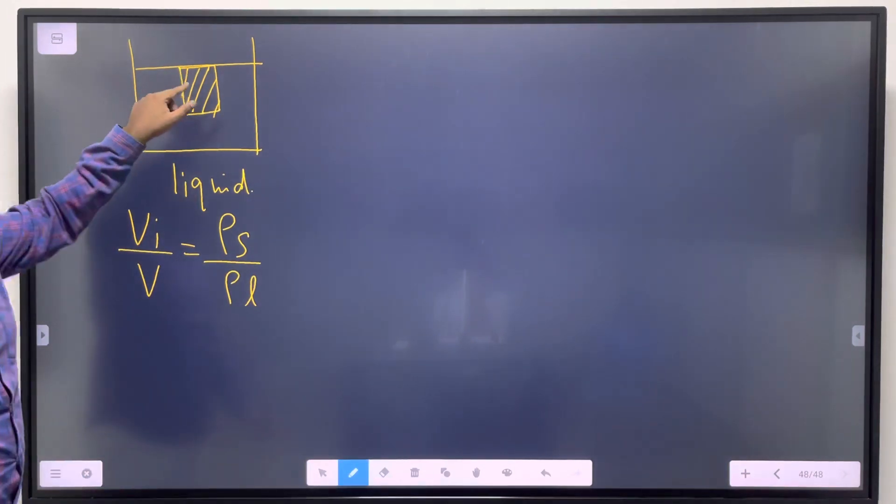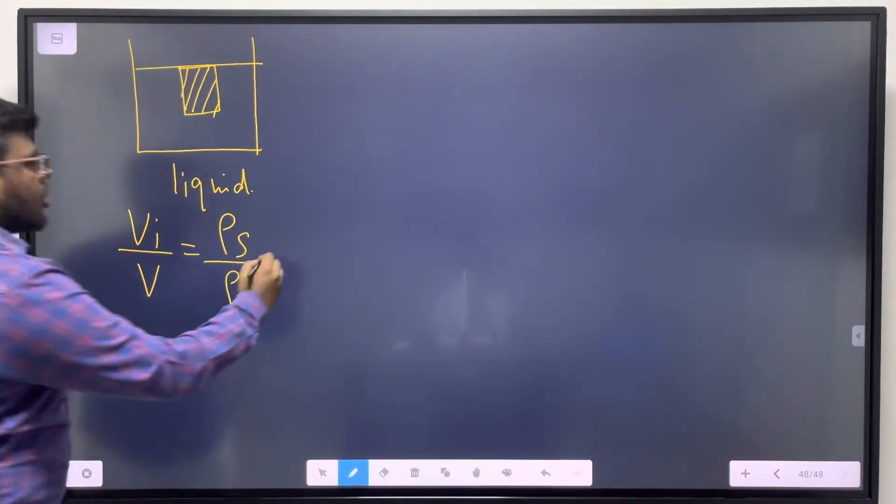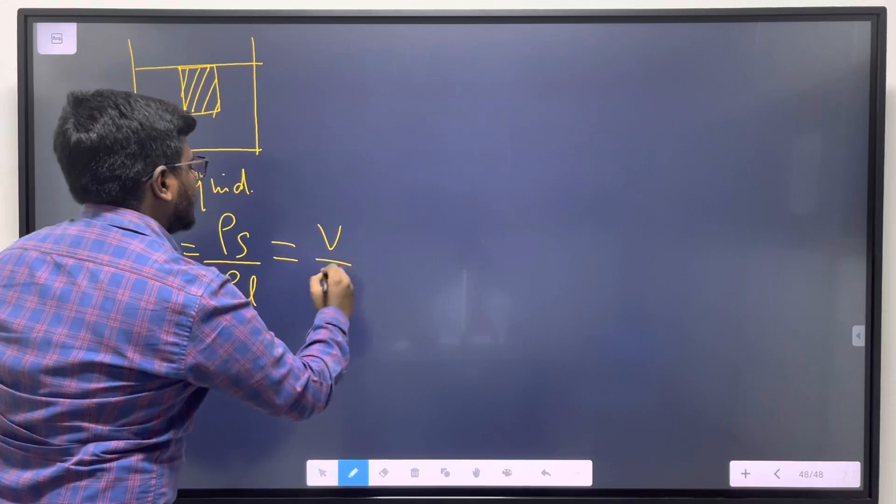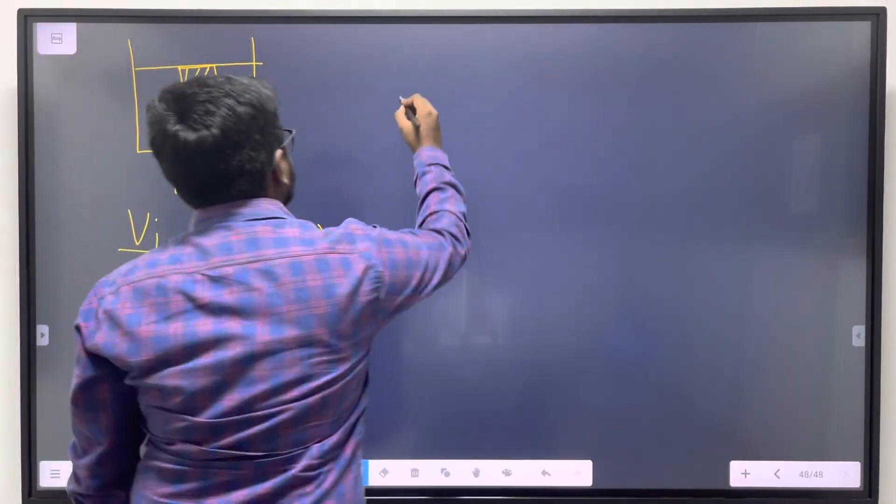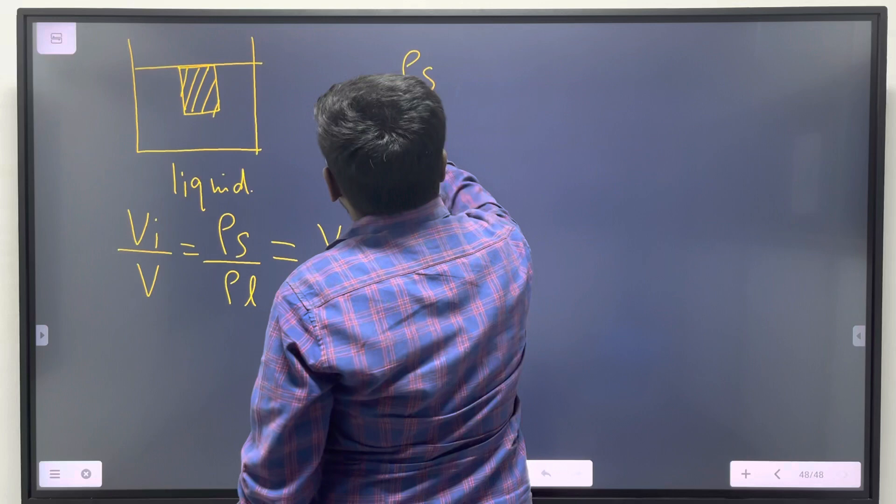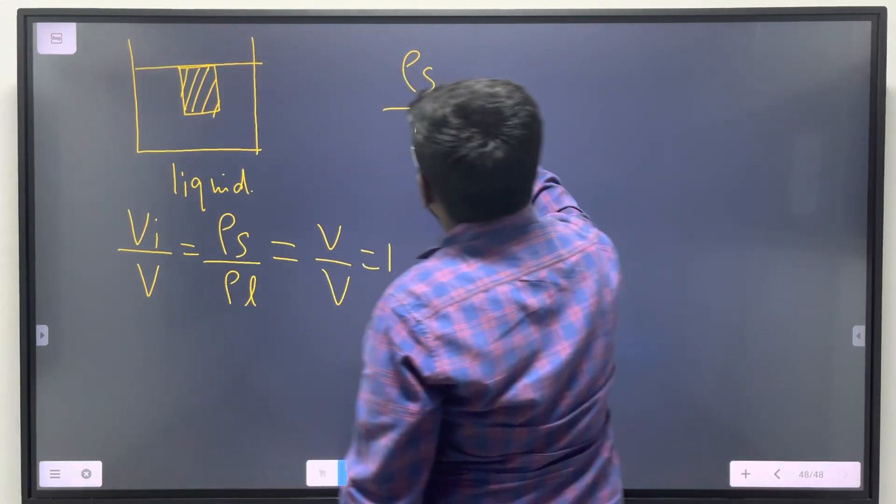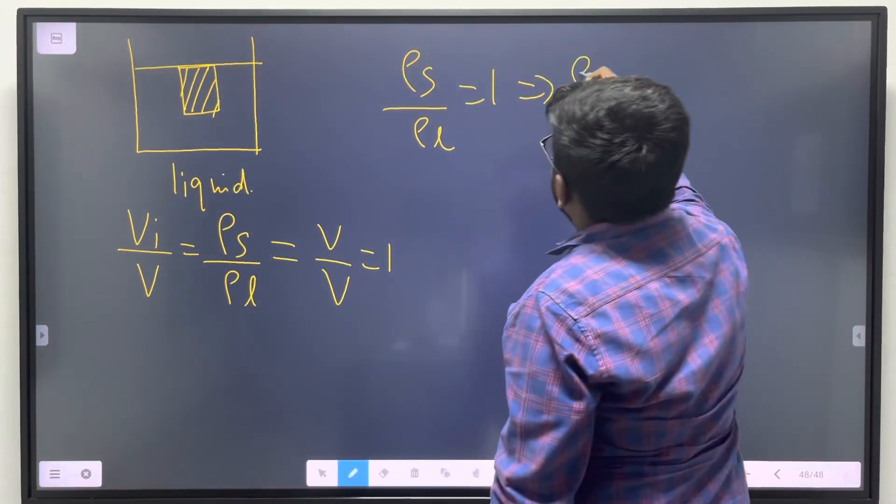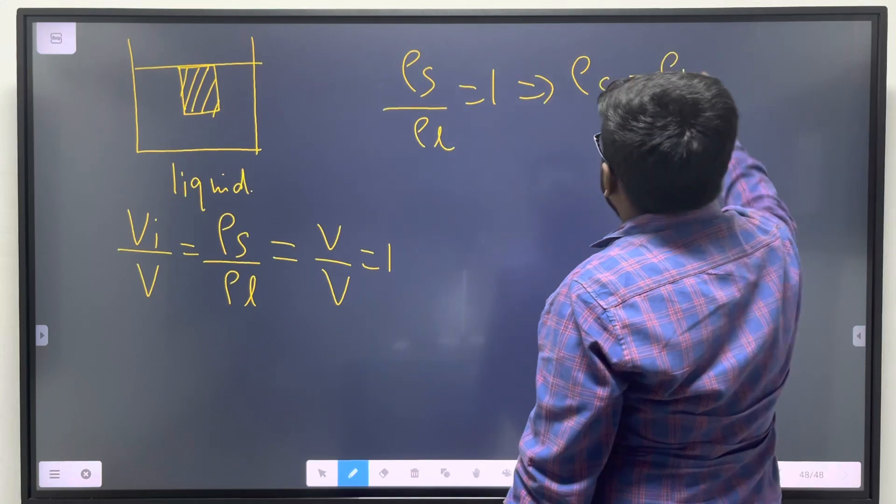When the block just floats, the immersed volume equals the total volume, so V/V = 1. Therefore, ρ_s/ρ_l = 1, which implies ρ_s = ρ_l.